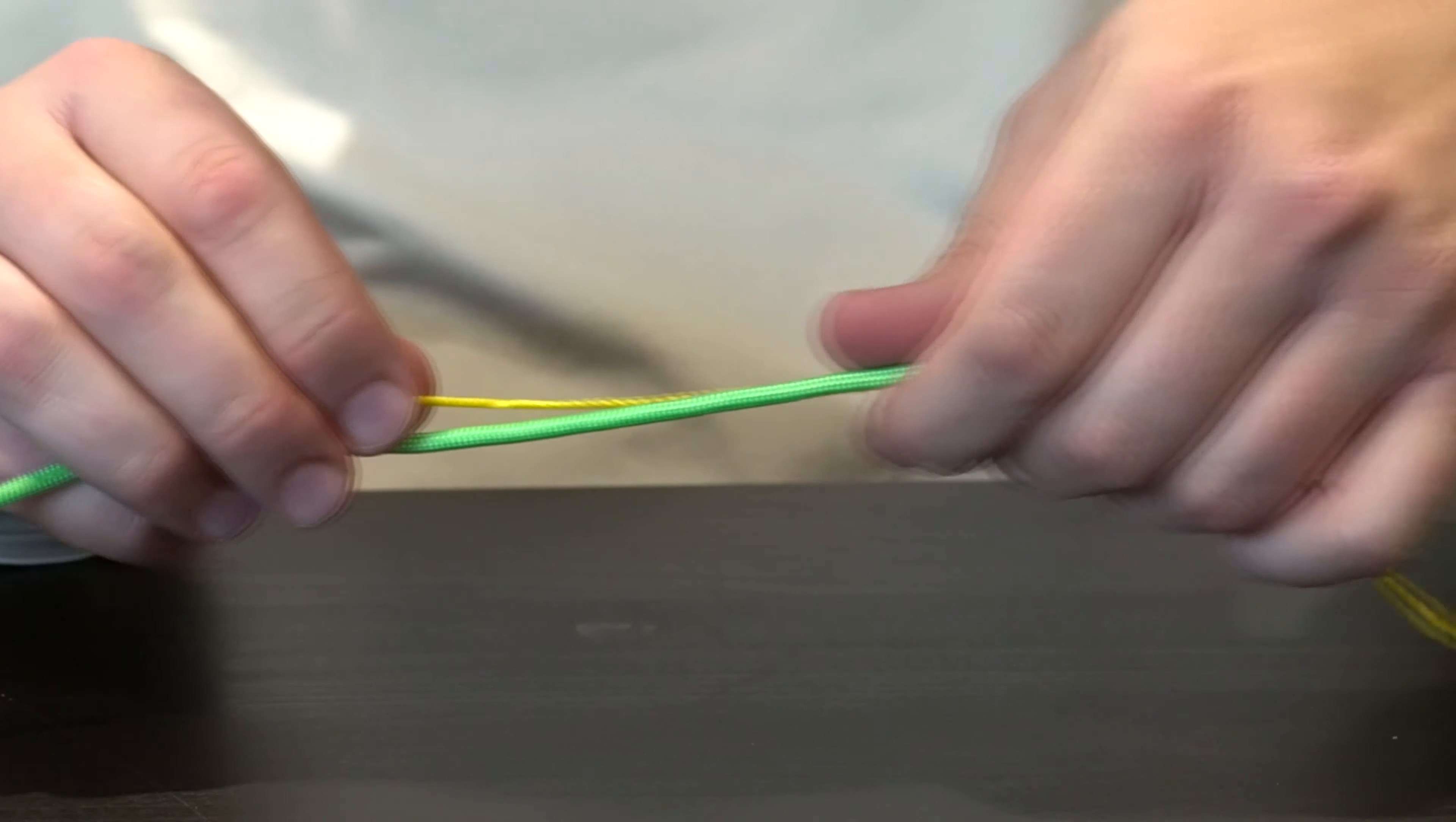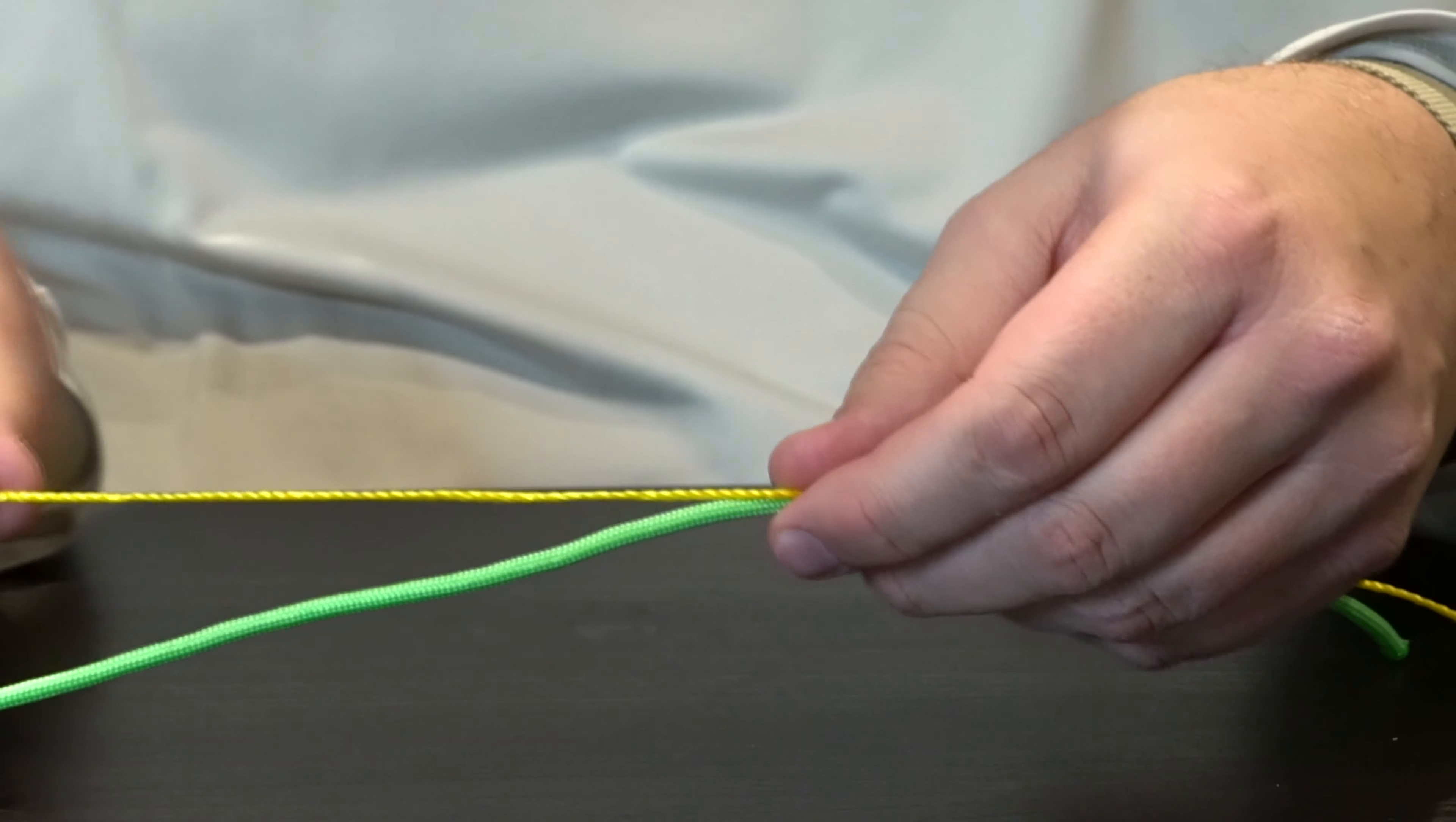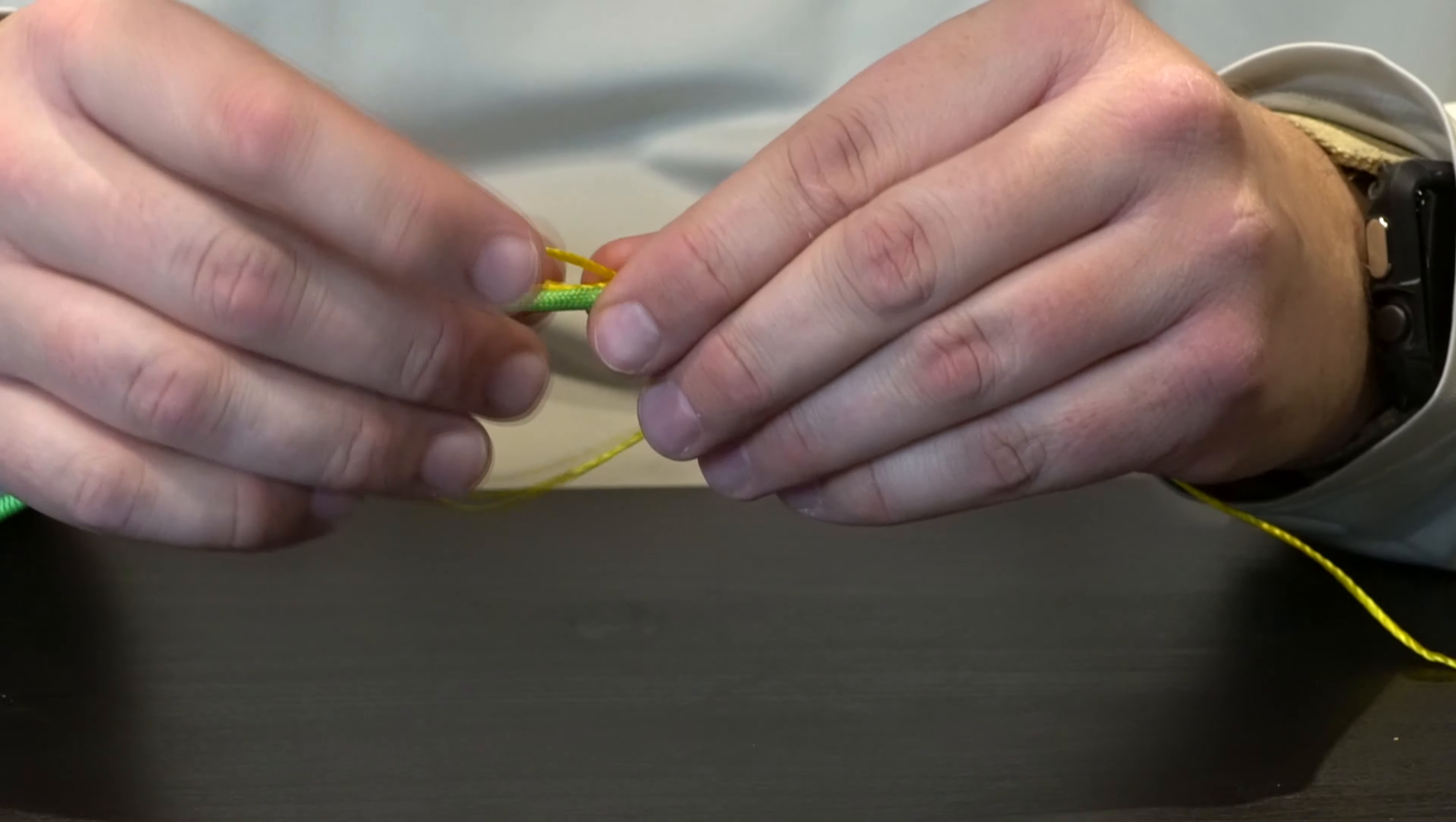I'll parallel the lines and take one side of it - this happens to be the smaller end - and I'm going to loop it around.